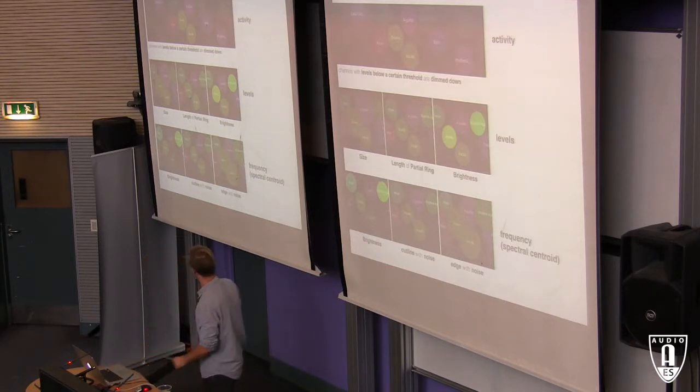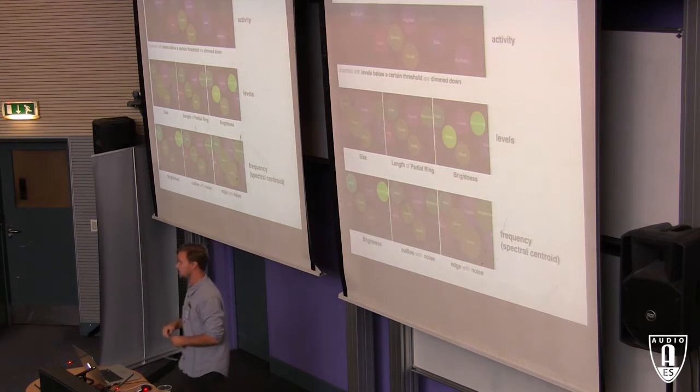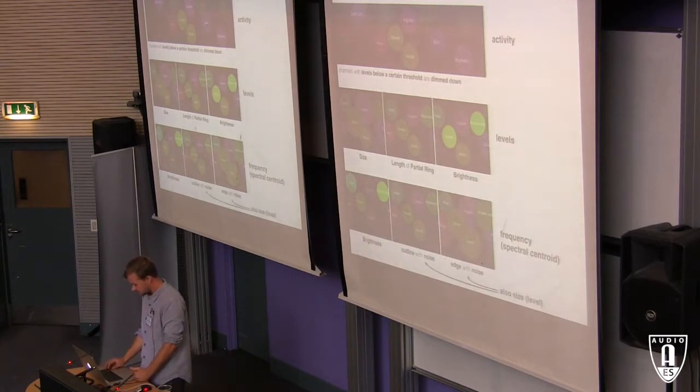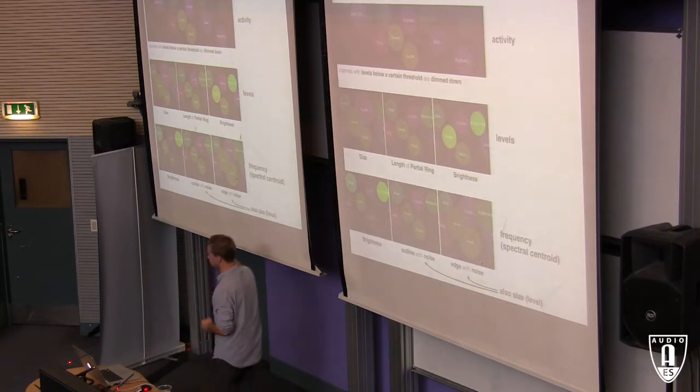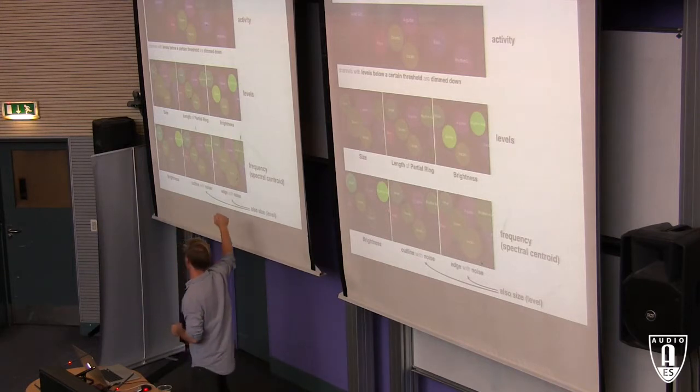And kind of the same induced line, but we fill out everything. So it's more the edge of the widget that gets distorted the higher the spectral centroid. And actually, these two also have mappings to the levels. So the radius of the outline and the size of the widget also changes here.